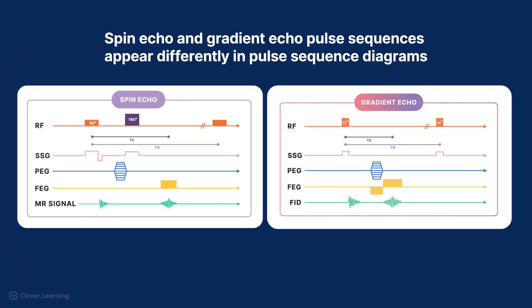Spin echo and gradient echo pulse sequences appear differently in pulse sequence diagrams. In a spin echo pulse sequence diagram, look for an RF pulse followed by a rephasing pulse with corresponding slice selection gradients. The echo forms when the spins are refocused.